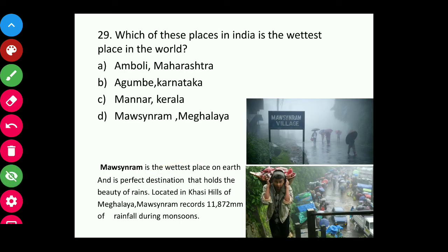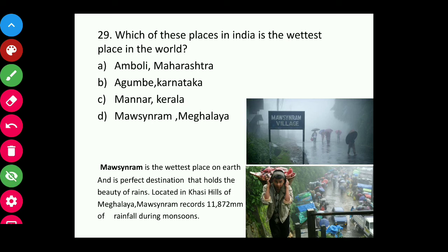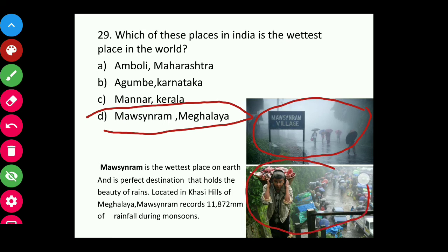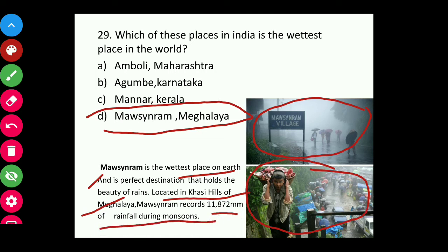Question twenty-nine: Which place in India is the wettest place in the world — Amboli Maharashtra, Agumbe Karnataka, Munnar Kerala, or Mawsynram Meghalaya? The answer is Mawsynram, Meghalaya. It rains almost throughout the year. Mawsynram is the wettest place on earth, located in the Khasi Hills, Meghalaya, and records 11,872 mm of rainfall during monsoons.